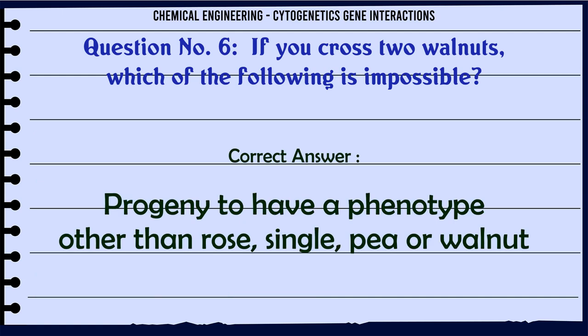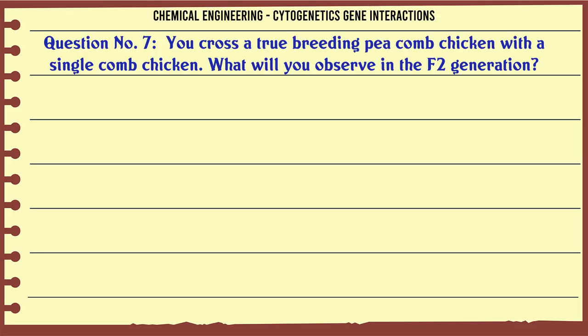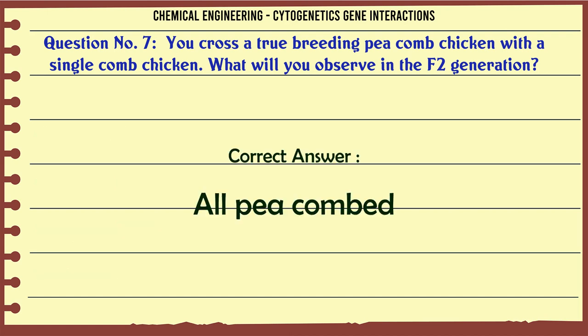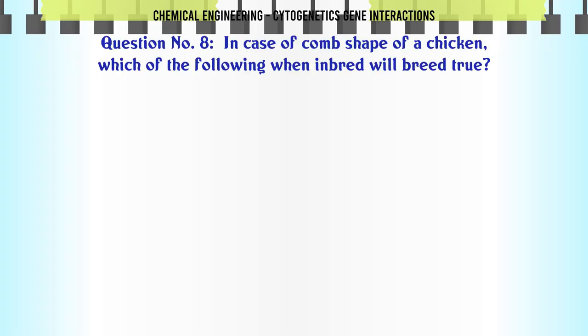You cross a true breeding pea-comb chicken with a single-comb chicken. What will you observe in the F2 generation? A. Ratio 1:2:1, B. Ratio 3:1, C. Ratio 9:3:3:1, D. All pea-combed. The correct answer is All pea-combed.